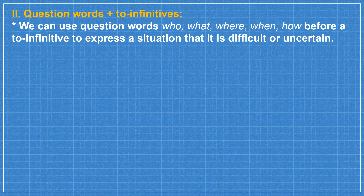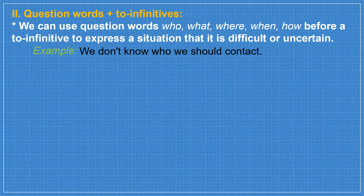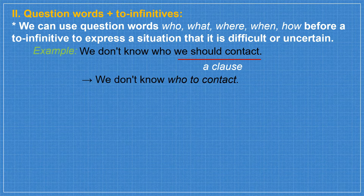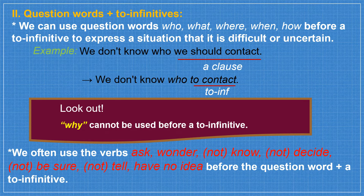Now we move to another part of grammar: question words before 'to-infinitives'. We can use question words — who, what, where, when, how — before a 'to-infinitive' to express a situation that is difficult or uncertain. Example: 'We don't know who we should contact' → 'We don't know who to contact.' Note: 'why' cannot be used before 'to-infinitives'. We often use the verbs: ask, wonder, know, not know, decide, not decide, be sure, not be sure, tell, not tell, have no idea — before the question word plus a 'to-infinitive'.